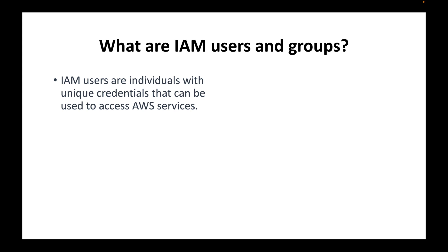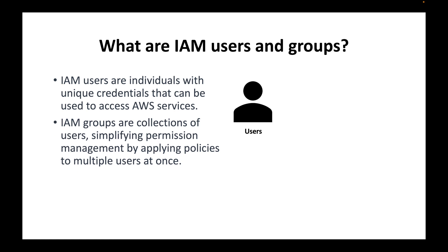The next question is: what are IAM users and IAM groups? IAM users are individual users, and each of these individual users will have unique credentials using which they can access AWS services. If you want to share your account with others, we create IAM users. Each IAM user will have unique credentials to log into the AWS account. IAM groups are collections of users.